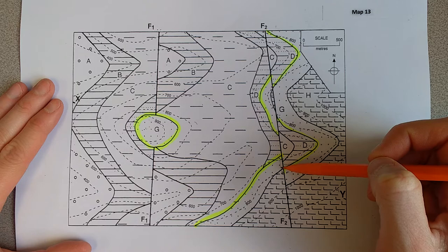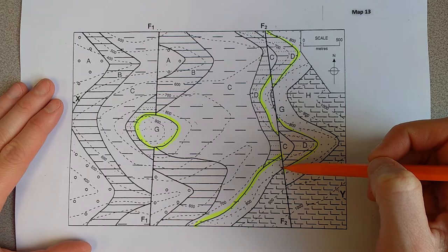Whereas my fault 2 is displacing my unconformity, so it's causing some kind of movement here. So that shows us that fault 2 is younger than the unconformity, because it has cut the unconformity and caused some kind of movement on that.